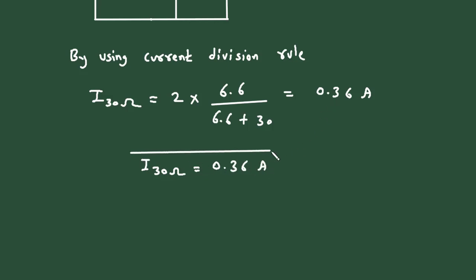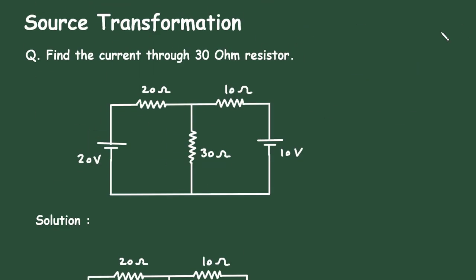So this is how we can find the value of current by using the source transformation technique. Check the link in the comment section and install the app for free. Thanks for watching.